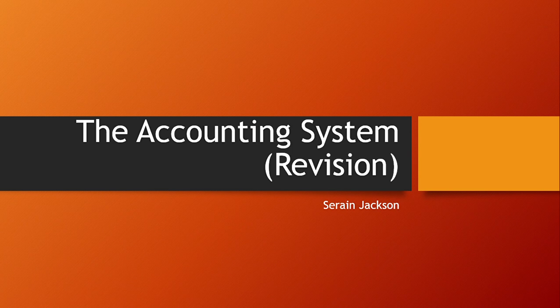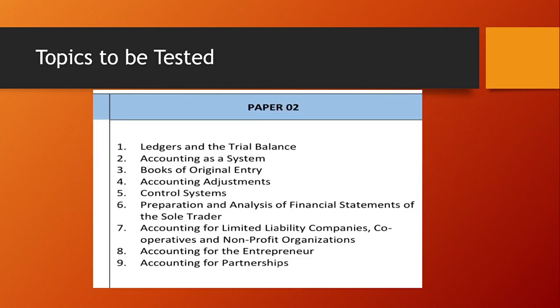Welcome back to another episode of Everything Business. It's the weekend before the exam and we want to do some revision on the accounting system. These are the topics that CXC had given — they'll be testing on paper two for this 2021 examination. They don't normally do this, but they have provided the list of topics, and we'll see right here the accounting system or accounting as a system.